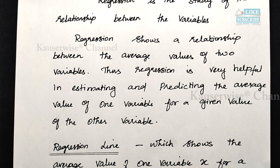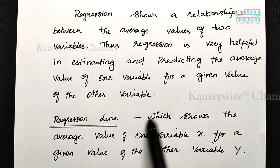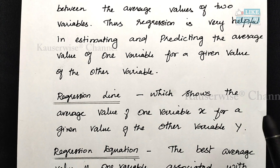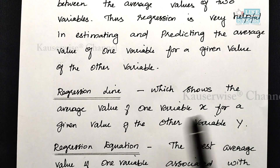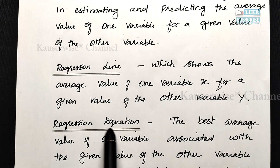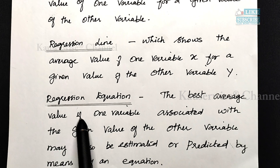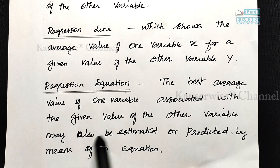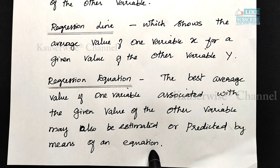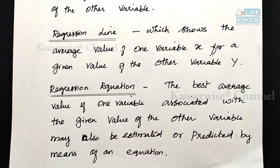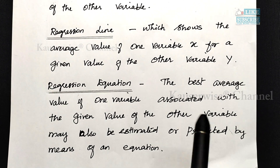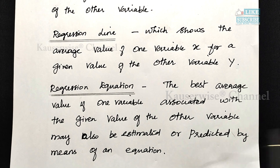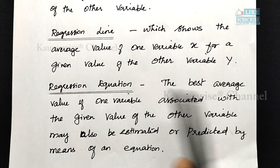Here we have a regression line. What is a regression line? It shows the average value of one variable — that is x — for a given value of the other variable, y. With the help of one given variable, we are going to find out the other variable. We find the best average of one variable which is related to the other variable, and we estimate or predict using a regression equation.